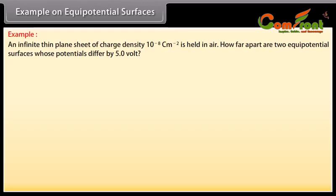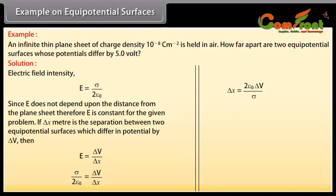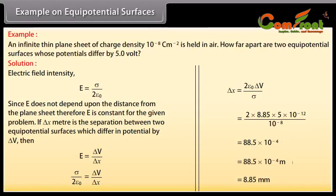Example on equipotential surfaces. An infinite thin plane sheet of charge density 10 to the power minus 8 coulomb per meter squared is held in air. How far apart are two equipotential surfaces whose potentials differ by 5 V? We know that electric field intensity E equals σ upon 2ε₀. Since E does not depend upon the distance from the plane sheet, E is constant. If δX meters is the separation between two equipotential surfaces which differ in potential by δV, then E equals δV upon δX. We evaluate δX as 2ε₀ δV divided by σ. Putting the values, we get δX equals 8.85 millimeters.